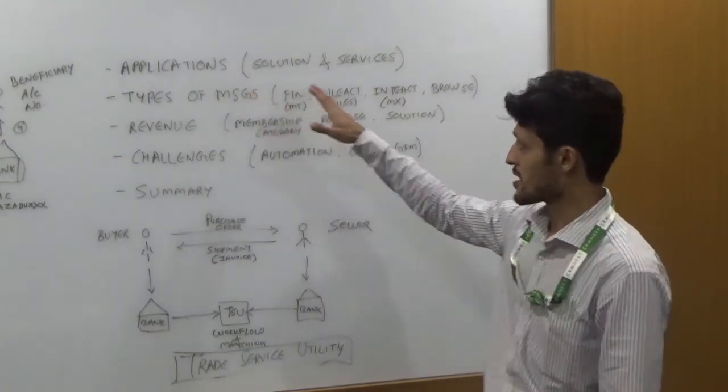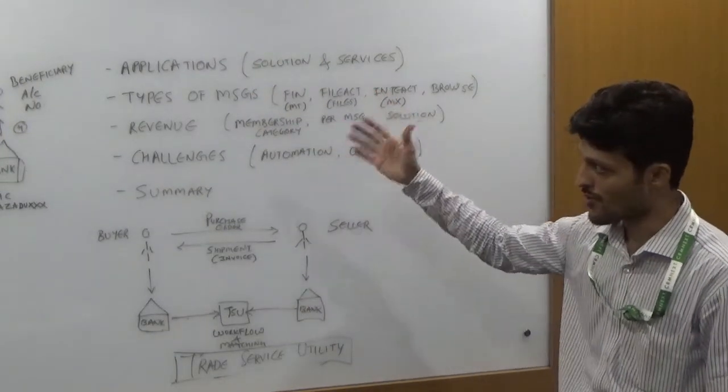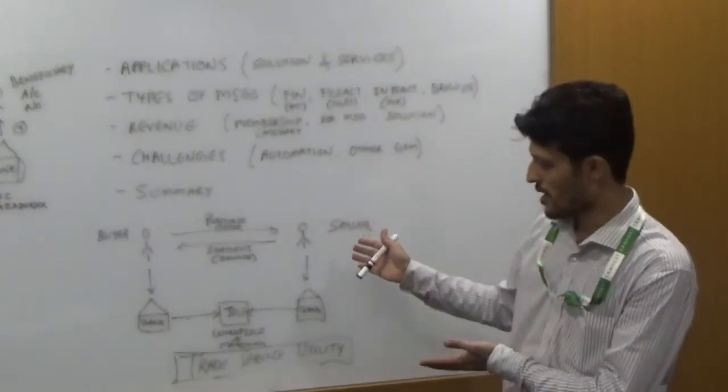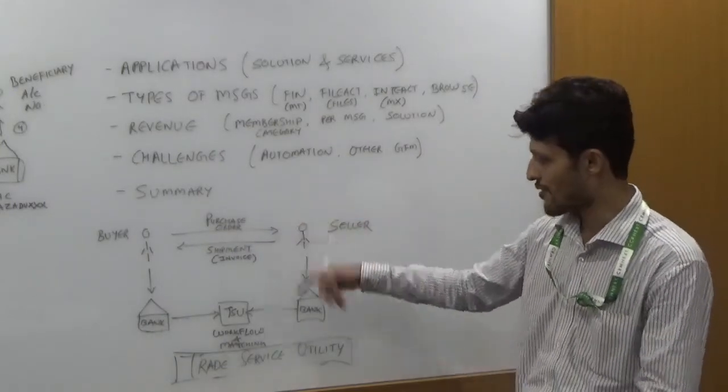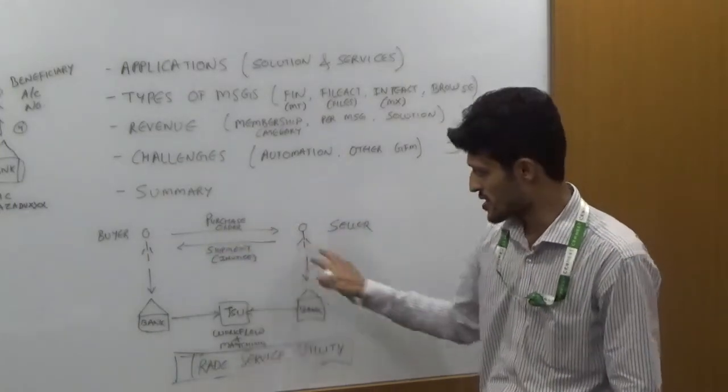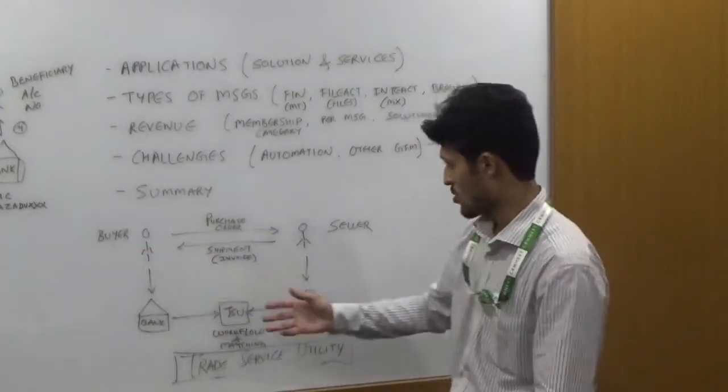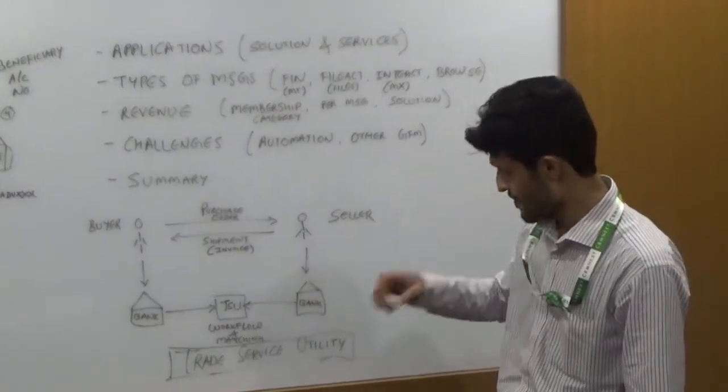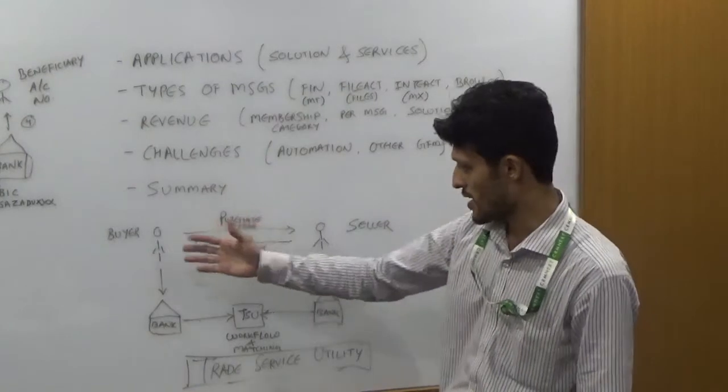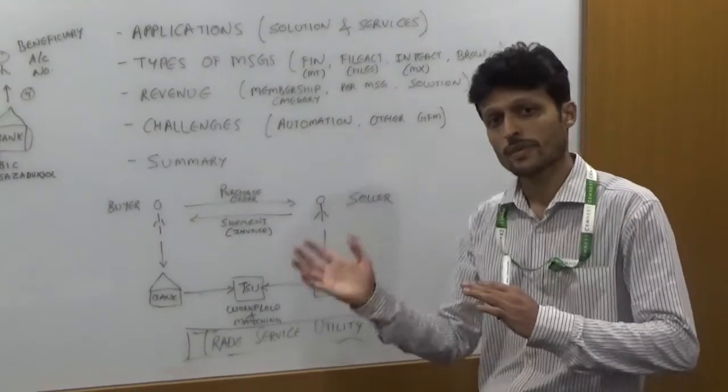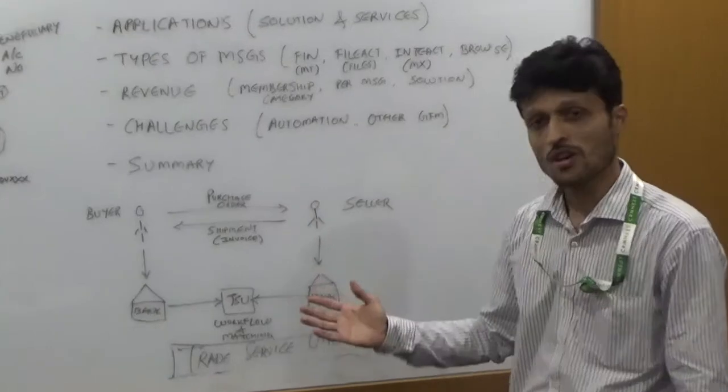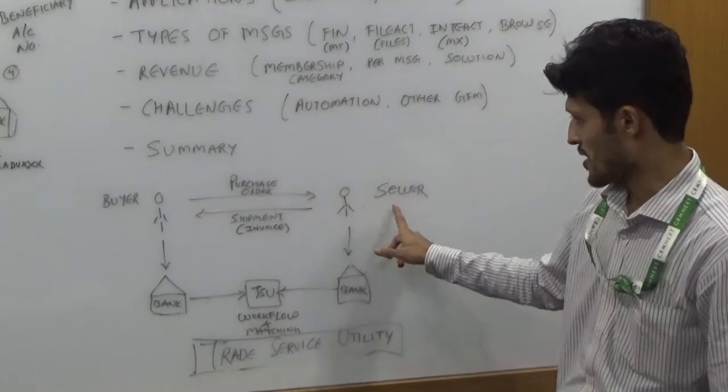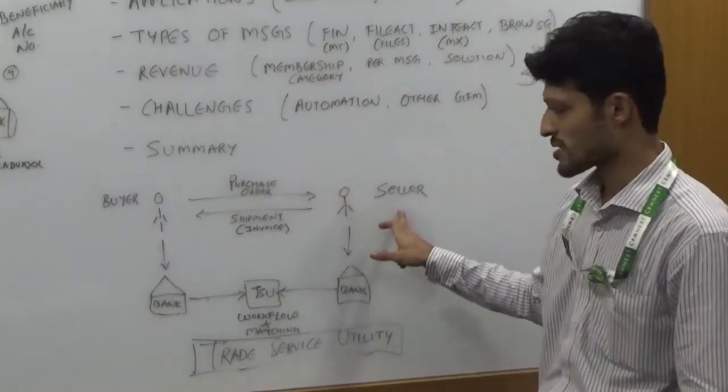So I was telling you about the different applications which are used by SWIFT Network. It provides different solutions in case of trade service utility. Consider this simple example wherein there is a buyer who is like an importer, and a seller who is an exporter. The buyer is going to request the seller to send a certain good on a certain day with certain quantity and remuneration details. This is a purchase order issued by a buyer to a seller.